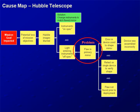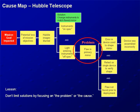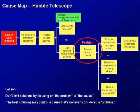By focusing on the problem, you miss a set of solutions that work very well, because it's not really about the problem — it's about the goals. You should always start with the overall goals of the organization and back into causes to find the best solutions. The lesson here is: don't limit your solutions by just focusing on the problem or the cause as a single thing. Understand the causes. The best solutions may control a cause that's not even considered a problem.